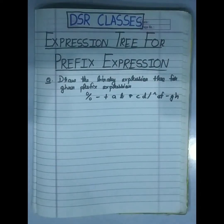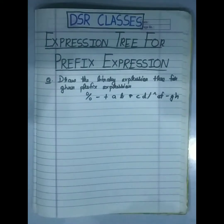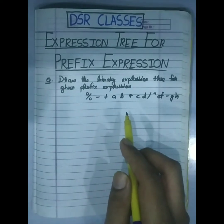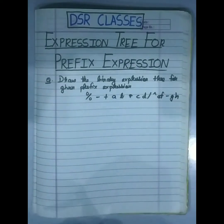Let's start with expression trees for a prefix expression. The first question is: construct a binary expression tree for the given prefix expression. The prefix expression is: mod minus plus a b minus c d divide power e f minus g h.